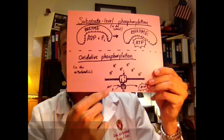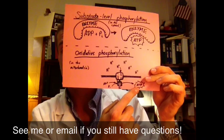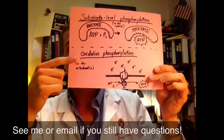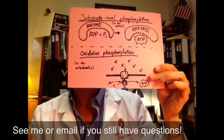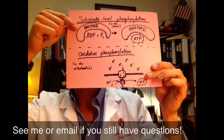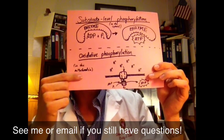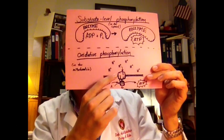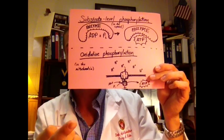Both are phosphorylation, or the addition of a phosphate molecule. One occurs in the cytosol and involves an enzyme and no hydrogen. The other occurs in the mitochondria, involves hydrogen, and a spinning wheel of ATP synthase.